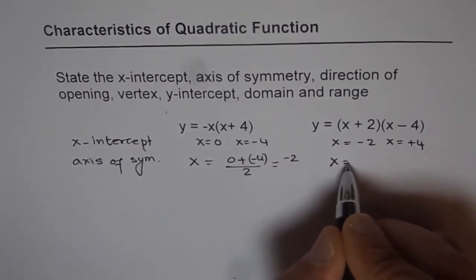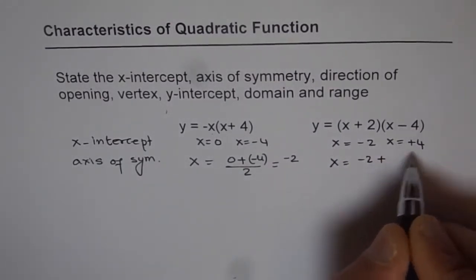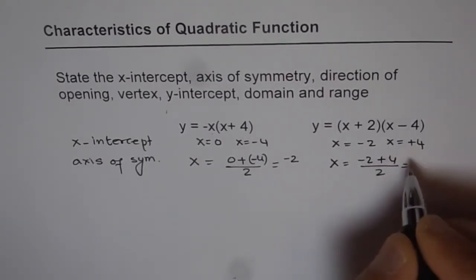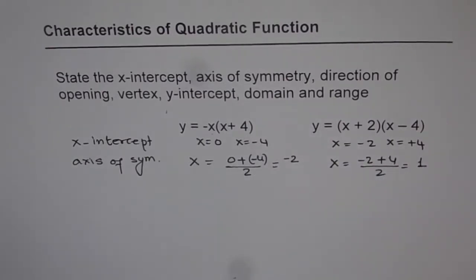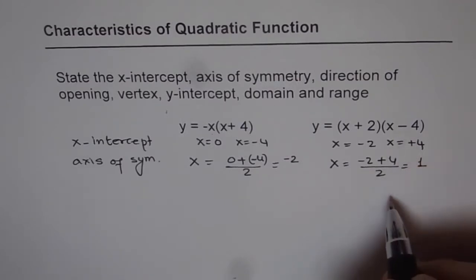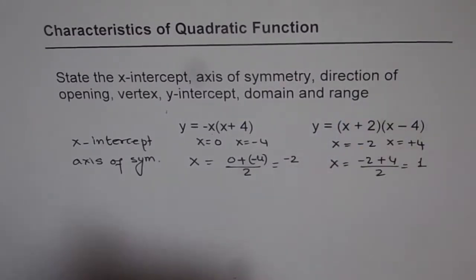Here x equals to minus 2 plus 4 divided by 2. And that gives us 4 minus 2 is 2. 2 by 2 is 1. So axis of symmetry is x equals to 1 for the second equation.